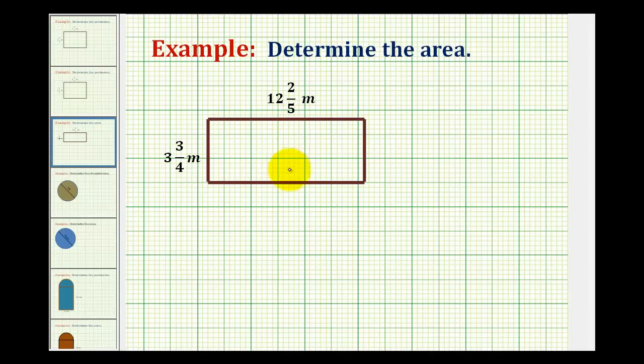We want to determine the area of this rectangle with the dimensions given as mixed numbers. Because the dimensions are given in meters, the area would be the number of square meters that would fit inside this rectangle modeled by this shaded region.